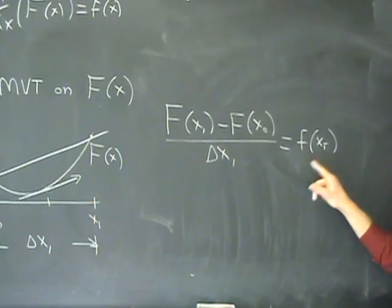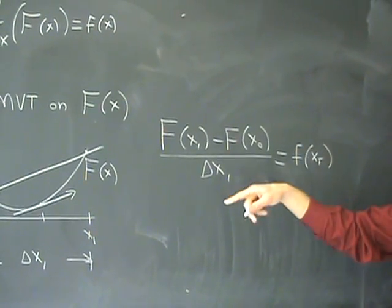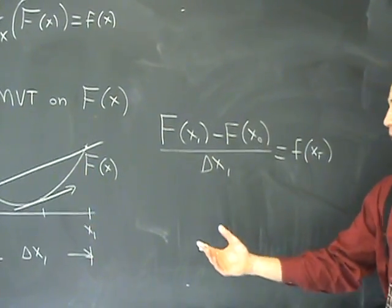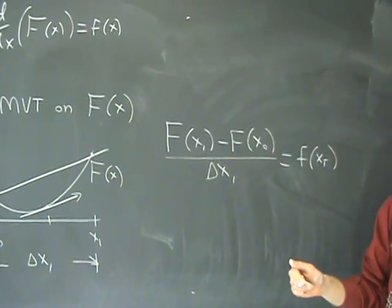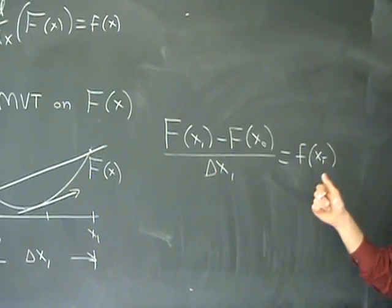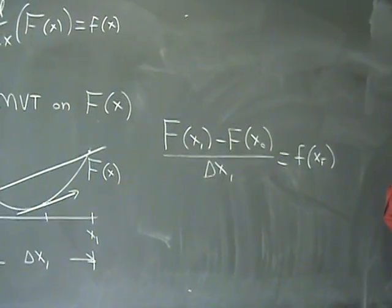I'm just going to put a little bar over it, meaning that is the point guaranteed to exist inside the interval x₀ to x₁ by the mean value theorem. We're going to need this relationship in the next series, but not quite in this form.